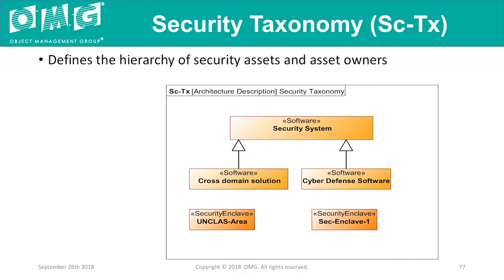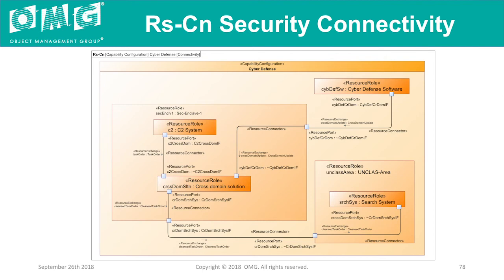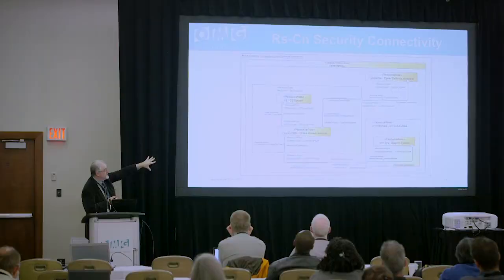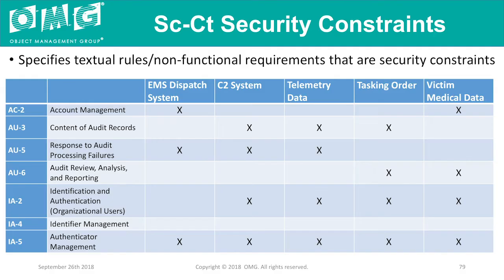The security views allow me to define different elements involved in security inside the system, including what are called security enclaves. I can build these up into an architecture, show the interactions, show different cross-domain solutions, and different resource roles. Inside the architecture I have a security enclave where I can specify the different systems that are part of it, the interfaces between them, and then generate tables representing the rules and non-functional requirements corresponding to these security elements.